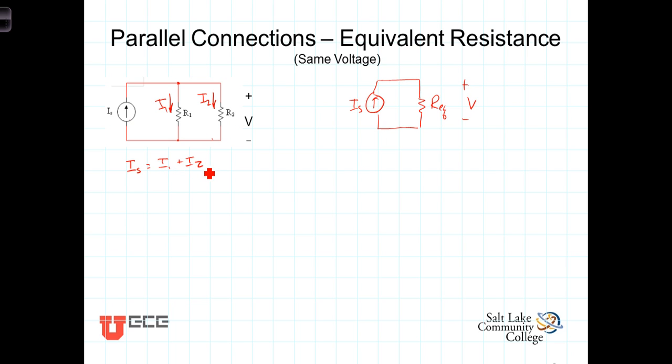Rewriting this with an expression for I1 and I2 in terms of V, the voltage, the parallel voltage, and R1 or R2, we get the source current then would equal V over R1 plus V over R2.